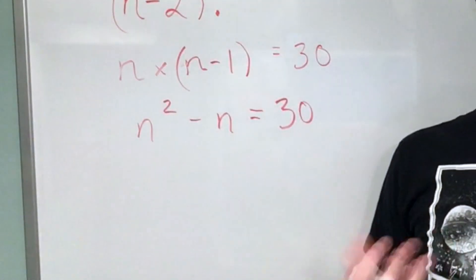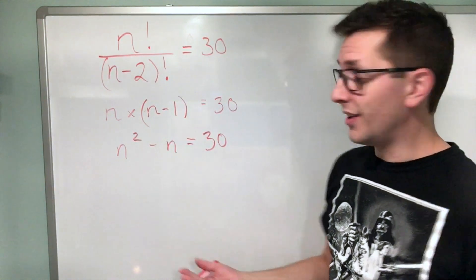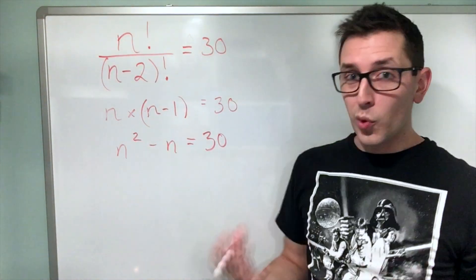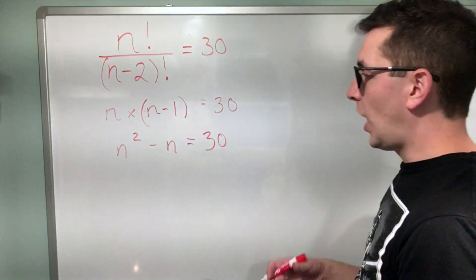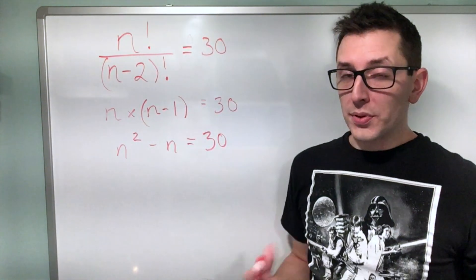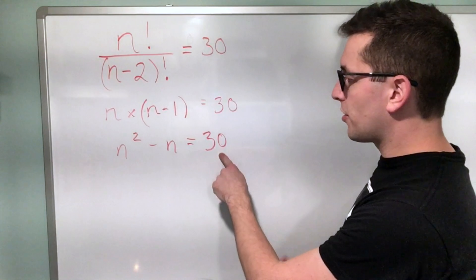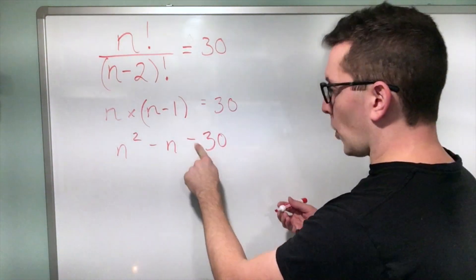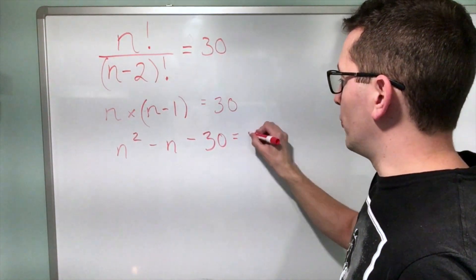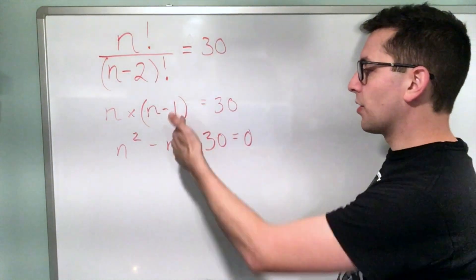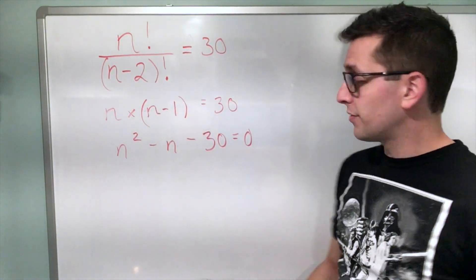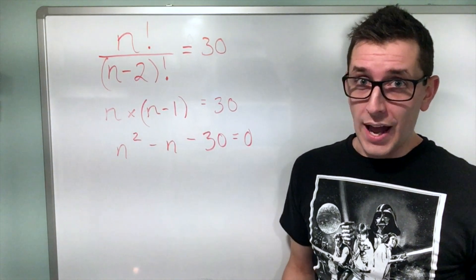Now, if you have any understanding of quadratics, this should get you excited. I have an n squared. That means I'm working with a quadratic equation here. At this point, you really should just be able to apply your understanding of solving quadratic equations. I can bring the 30 over to the other side by subtracting. Because I'm on a whiteboard, I'm just going to erase that and put an equal zero over here. All I've done is move that 30 over to the other side by making it negative, resulting in zero on the right-hand side.